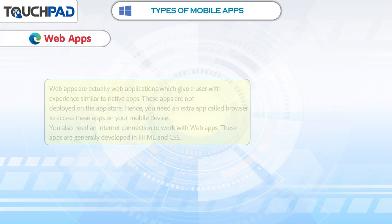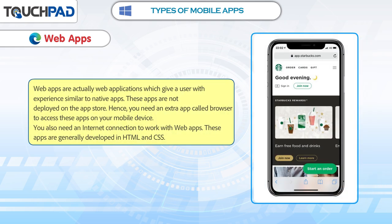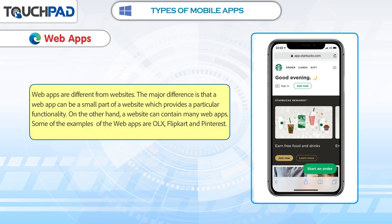Web apps are actually web applications which give a user an experience similar to native apps. These apps are not deployed on the app store. Hence, you need an extra app called a browser to access these apps on your mobile device. You also need an internet connection to work with web apps. These apps are generally developed in HTML and CSS. Web apps are different from websites. The major difference is that a web app can be a small part of a website which provides a particular functionality, while a website can contain many web apps. Some examples of web apps are OLX, Flipkart and Pinterest.